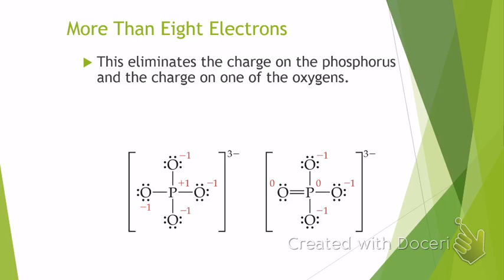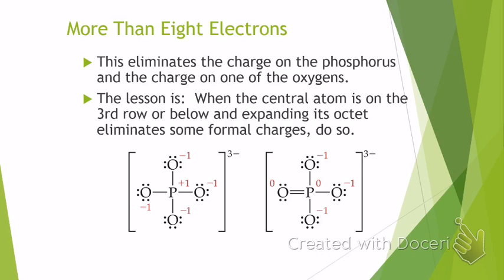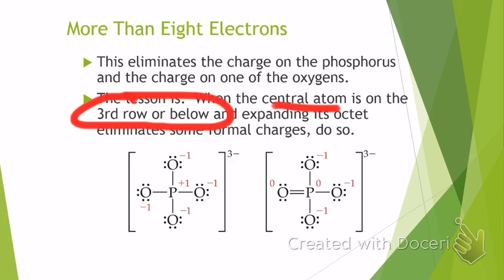So when is it okay to violate the octet rule? It is okay if the central atom is on the third row of the periodic table or below, so it can expand the octet and eliminate some of the formal charges. If expanding the octet doesn't eliminate formal charges or adds additional ones, then you don't want to do that. The atoms you see this the most with are phosphorus and sulfur — especially when you get into organic chemistry with sulfates and sulfonates, and in organic and biochemistry with phosphates, because this happens a lot in vivo.